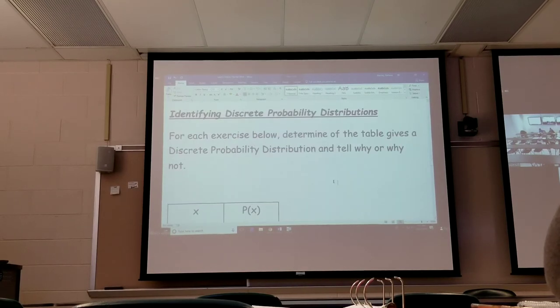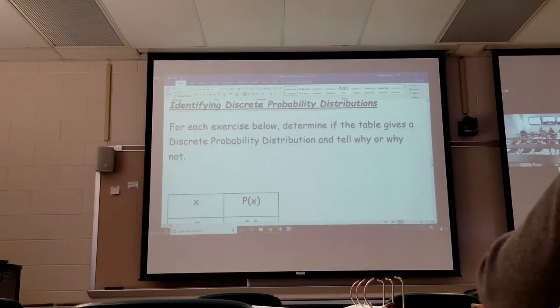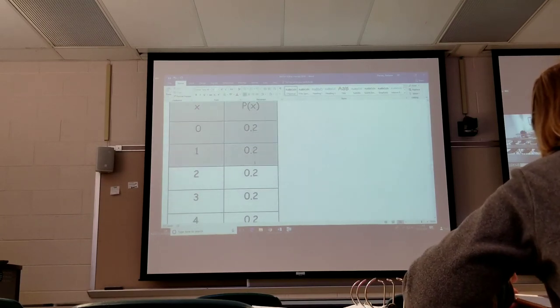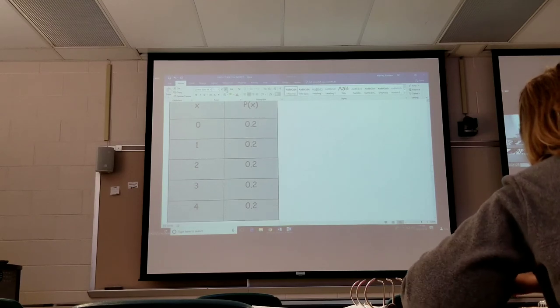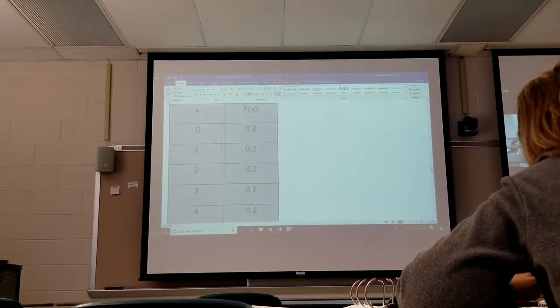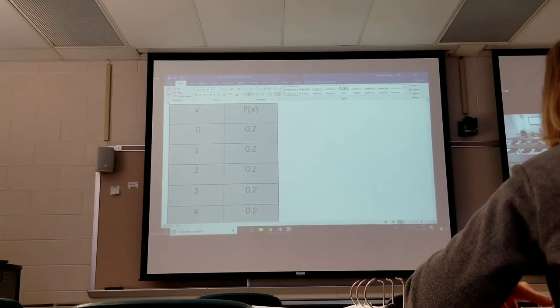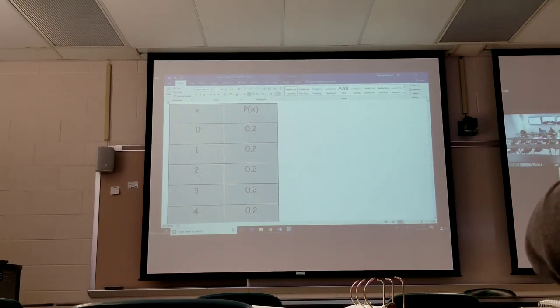Now we're identifying discrete probability distributions. I have some exercises here. For each exercise below, we're going to determine if the table gives a discrete probability distribution and then tell why or why not. The probabilities are all equally likely because they're the same. We have discrete random variable values of 0, 1, 2, 3, 4. The probability for each individual value is 0.2.